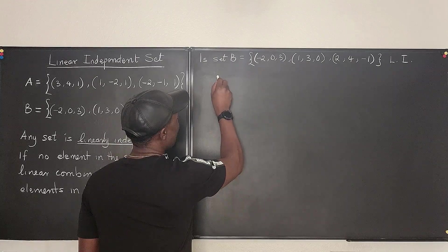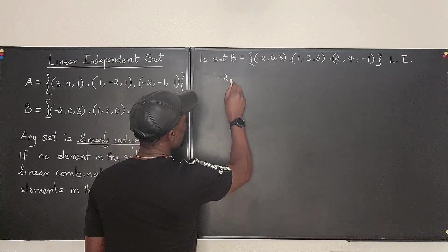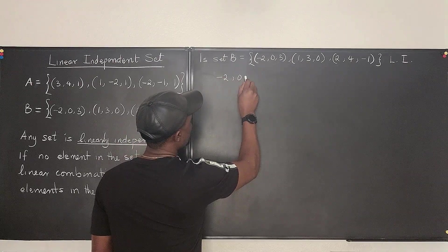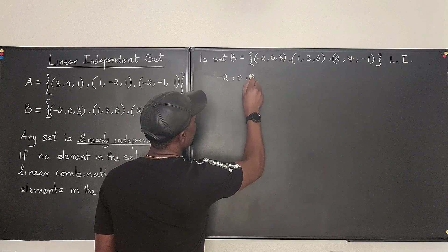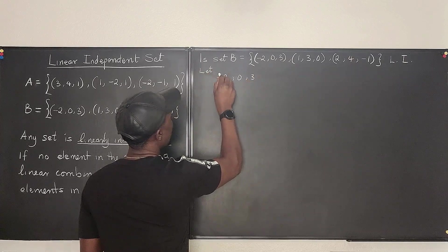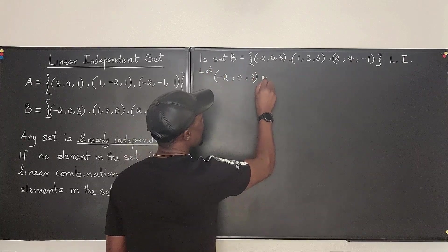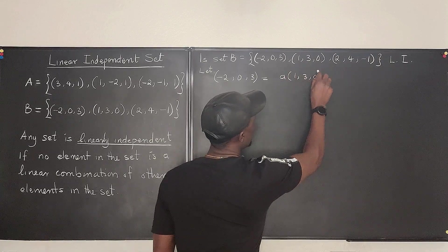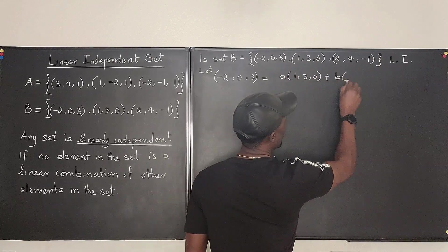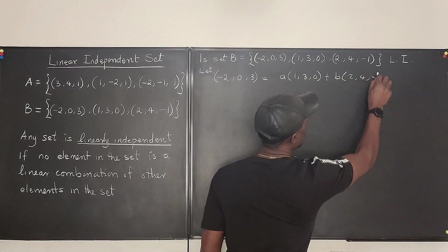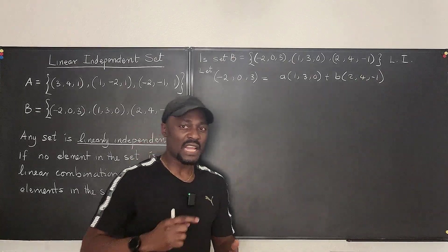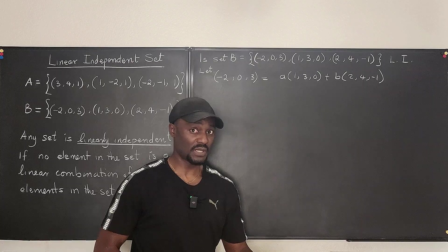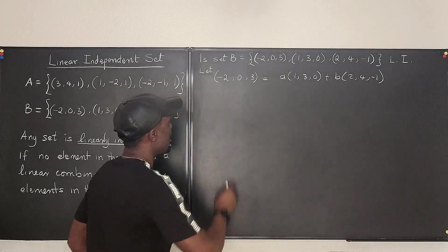We're going to say that (-2, 0, 3), let, is equal to A times (1, 3, 0), plus B times (2, 4, -1). We want to see whether A and B exist. Both of them must exist. So let's go.